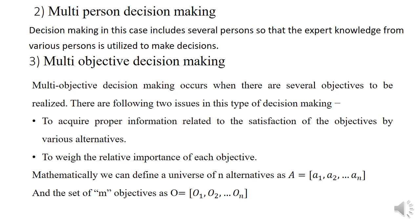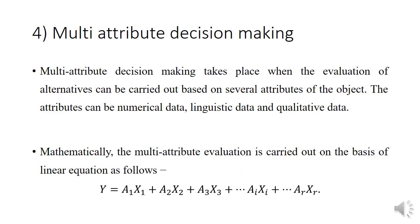The set of alternatives is denoted by A = {a_1, a_2, ..., a_n}. The fourth type is multi-attribute decision making, which takes place when the evaluation of alternatives can be carried out based on several attributes of the object. The attributes can be numerical data, linguistic data, and qualitative data. Mathematically, the multi-attribute evaluation is carried out on the basis of a linear equation of the form: y = a_1*x_1 + a_2*x_2 + ... + a_i*x_i + ... + a_r*x_r.